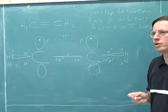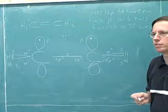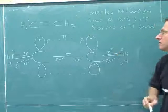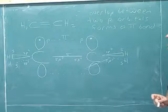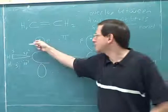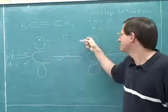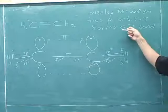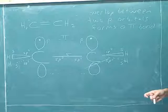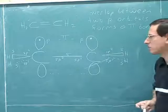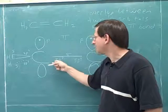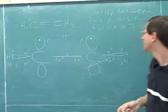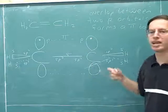A lot of the time people don't know when they should use the word 'p' and when they should use the word 'pi.' If you're talking about the orbital, you should use the word 'p.' But if you're talking about the type of bond, you should use the term sigma or pi. So sp2 and p are the names of orbitals, and sigma and pi are the names of bonds.